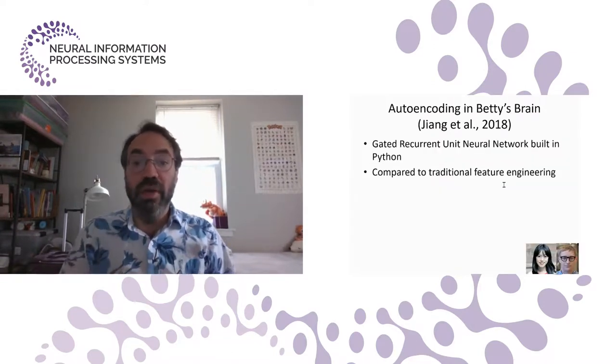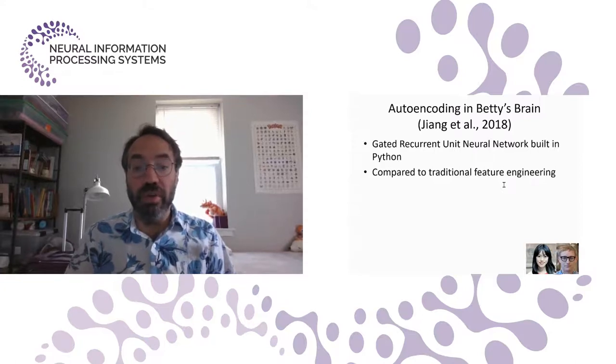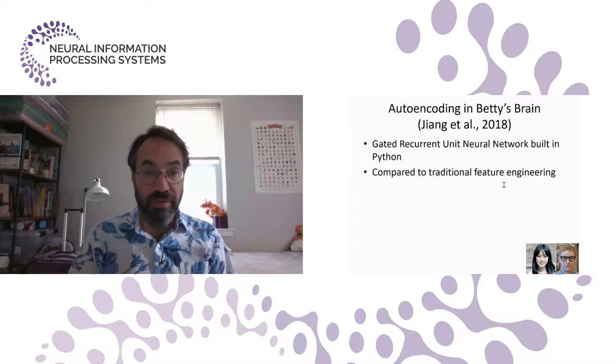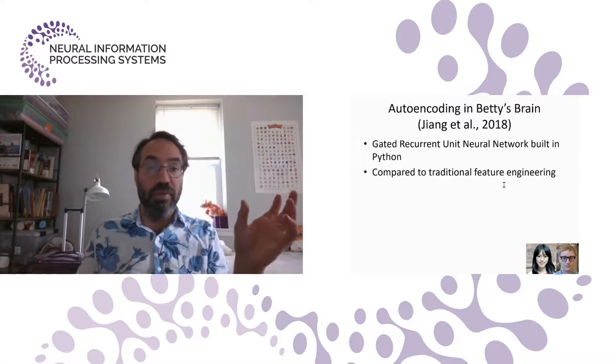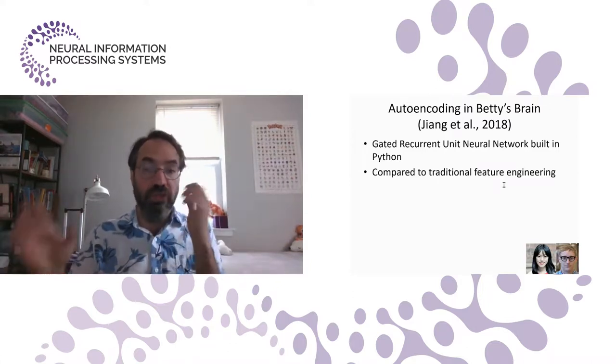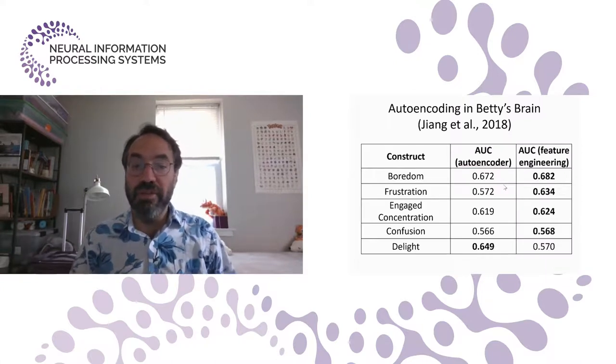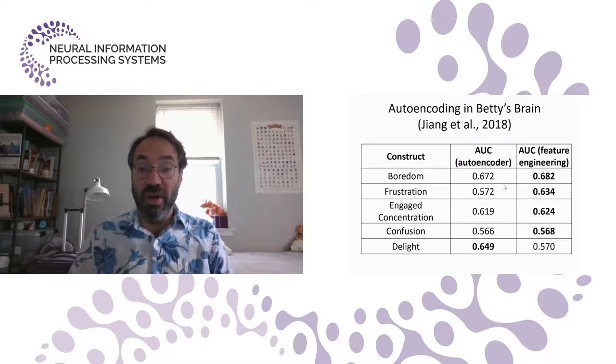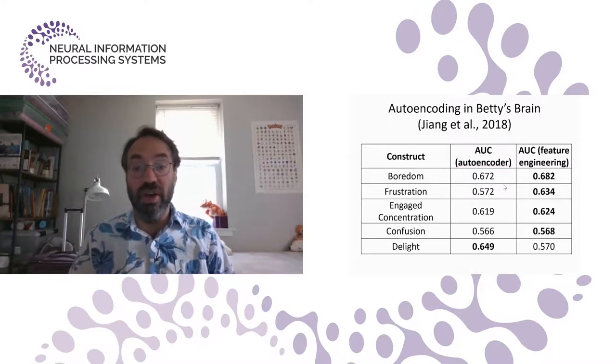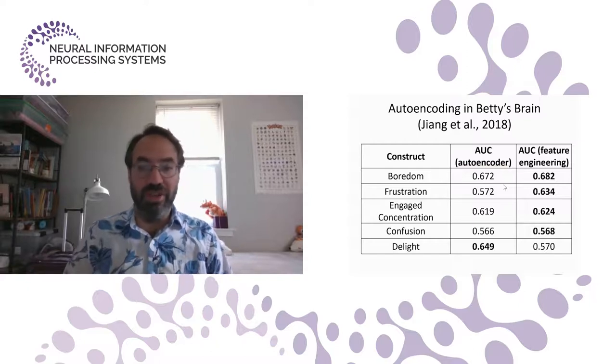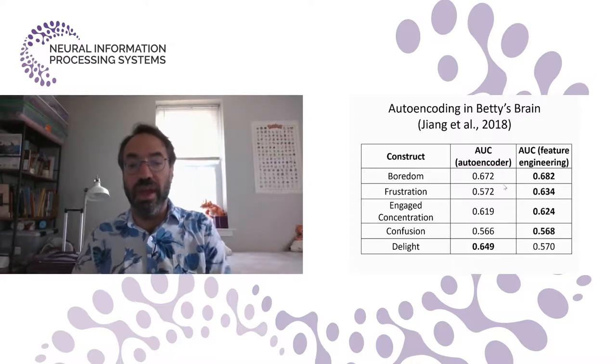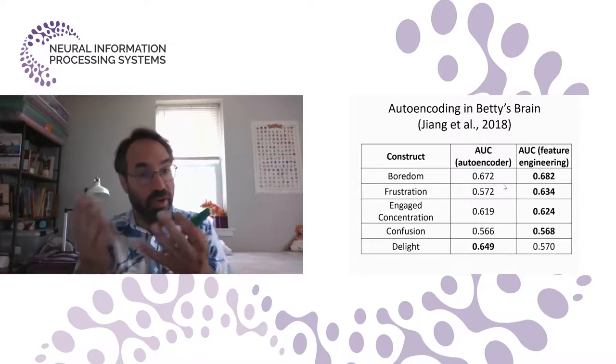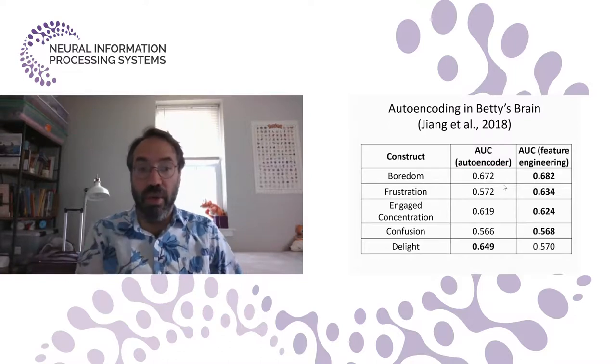In Betty's Brain, we tried using a gated recurrent unit neural network in Python, and we compared it to traditional feature engineering. We actually had one researcher experienced in using feature engineering doing the feature engineering part, and another researcher experienced in doing autoencoders doing the autoencoding part. We found that actually we got slightly higher AUCROC for the feature engineering for most constructs than the autoencoder. Neither model was fantastic for this environment. There's a lot of room for improvement, but the autoencoder definitely didn't seem to be a magic bullet kind of solution, unless you were looking at delight, where it was actually about 0.08 better.